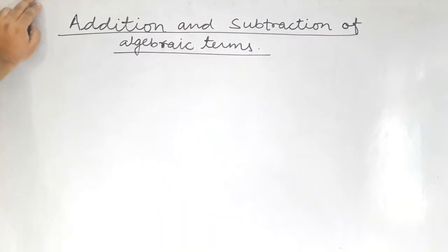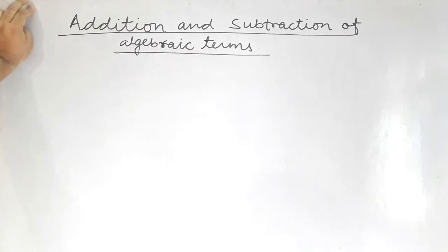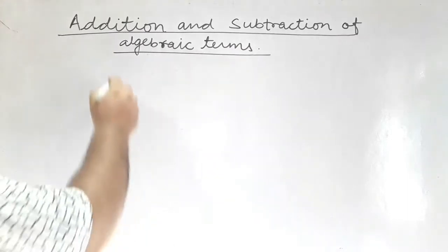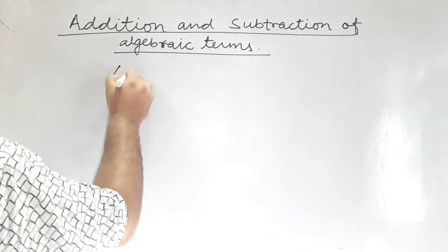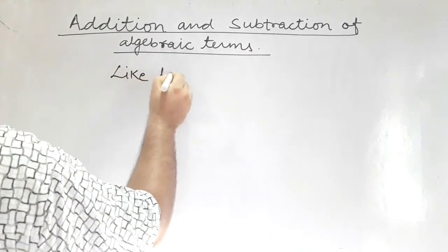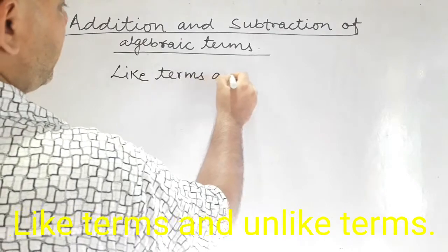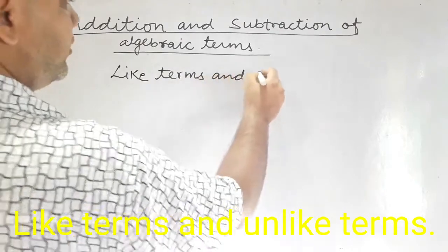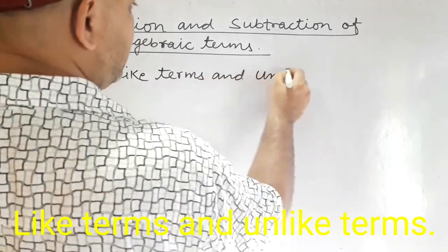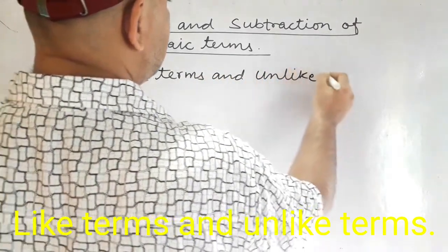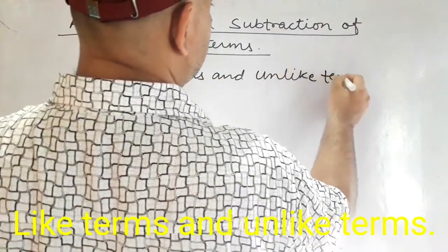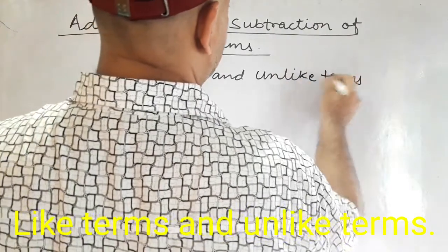Before starting the Addition and Subtraction of Algebraic Terms, we should know what are the two types of Algebraic Terms. The two types of Algebraic Terms are Like Terms and Unlike Terms.